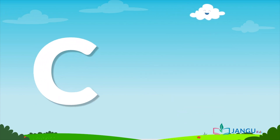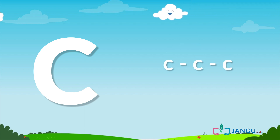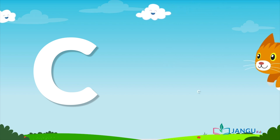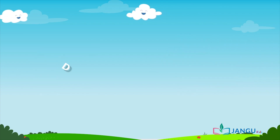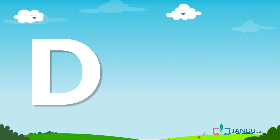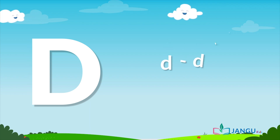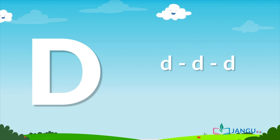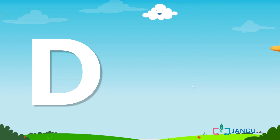C is pronounced as 'K' — K, K, K. Say after me: K, K, K. As in cat. D is pronounced as 'D' — D, D, D, D. Say after me: D, D, D, D. As in duck.